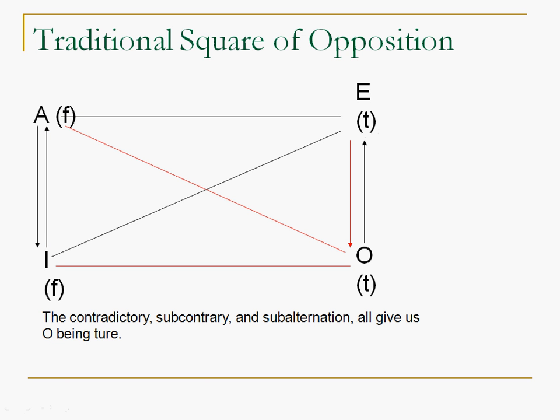All right? So, hopefully this makes sense. Now, in this particular case, knowing the truth value of one gave us the truth value of all of them. But let's look at another one.